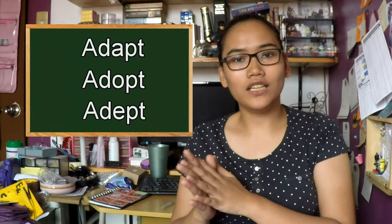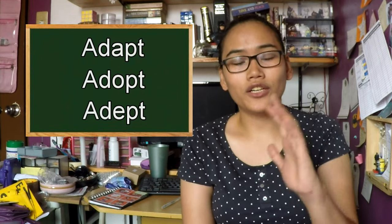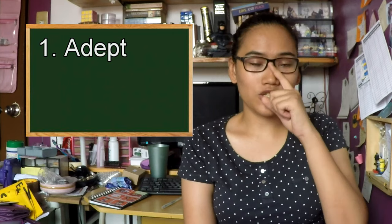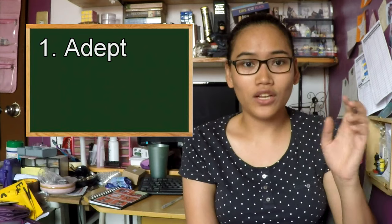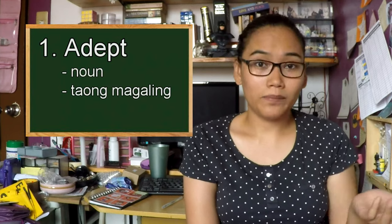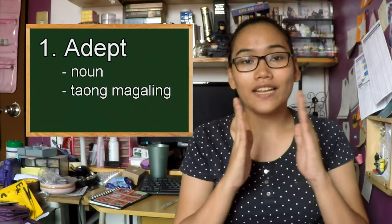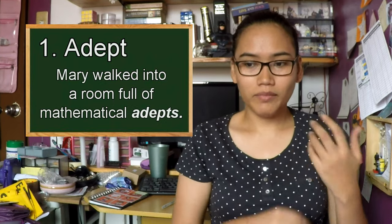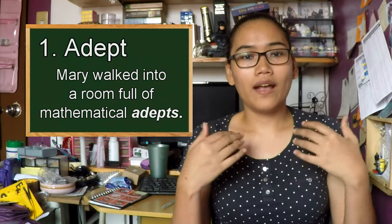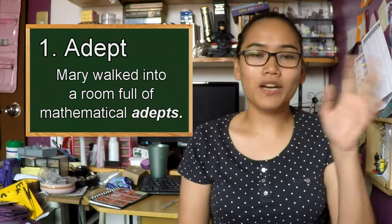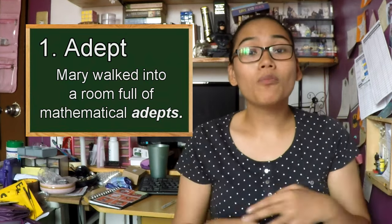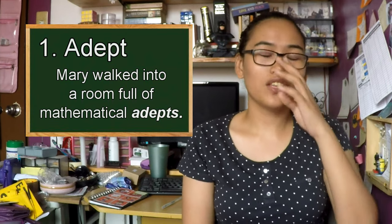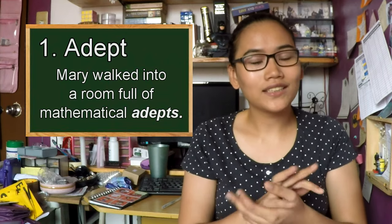Para magaling i-compartmentalize yung different na meanings nila, I'm going to start with adept first. Ang spelling: A-D-E-P-T — E yung gitnang vowel. Yung adept na word, actually dalawa ang pronunciation nyan, kasi dalawa yung klase ng definition ng word na yan. The first is adept — it's a noun, ibig sabihin tao siya. Ang adept ay isang tao na magaling or mahusay. For example, you can use a sentence like: Mary walked into a room of mathematical adepts. Ibig sabihin, si Mary pumasok sa isang kwarto na puno ng mga taong mahusay sa math.